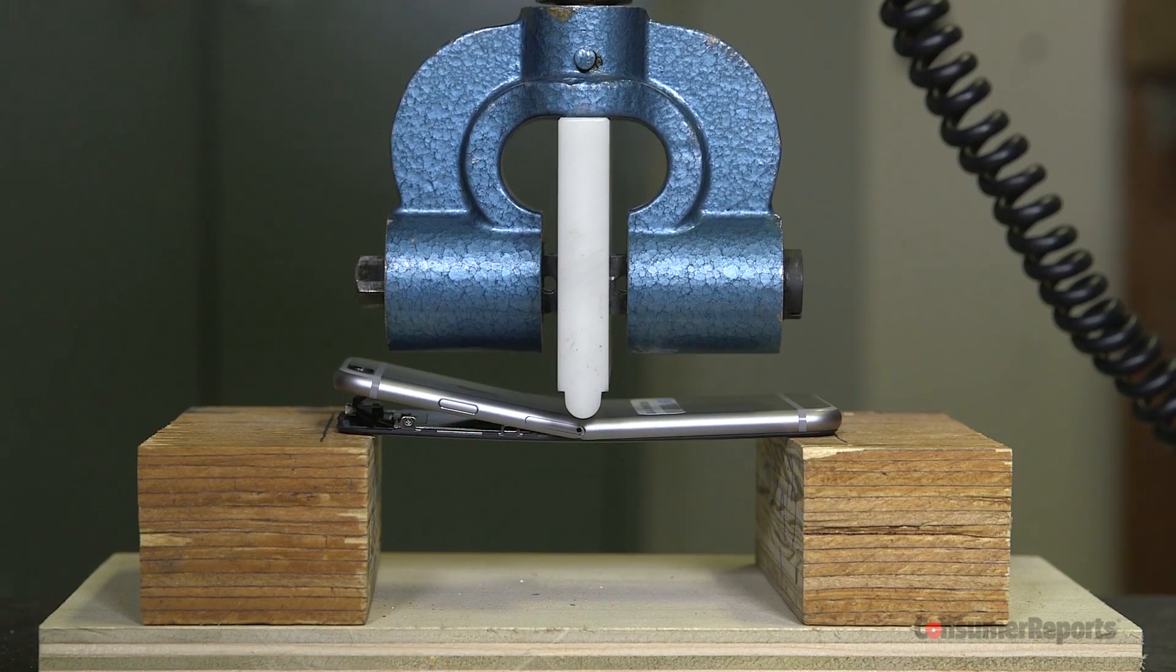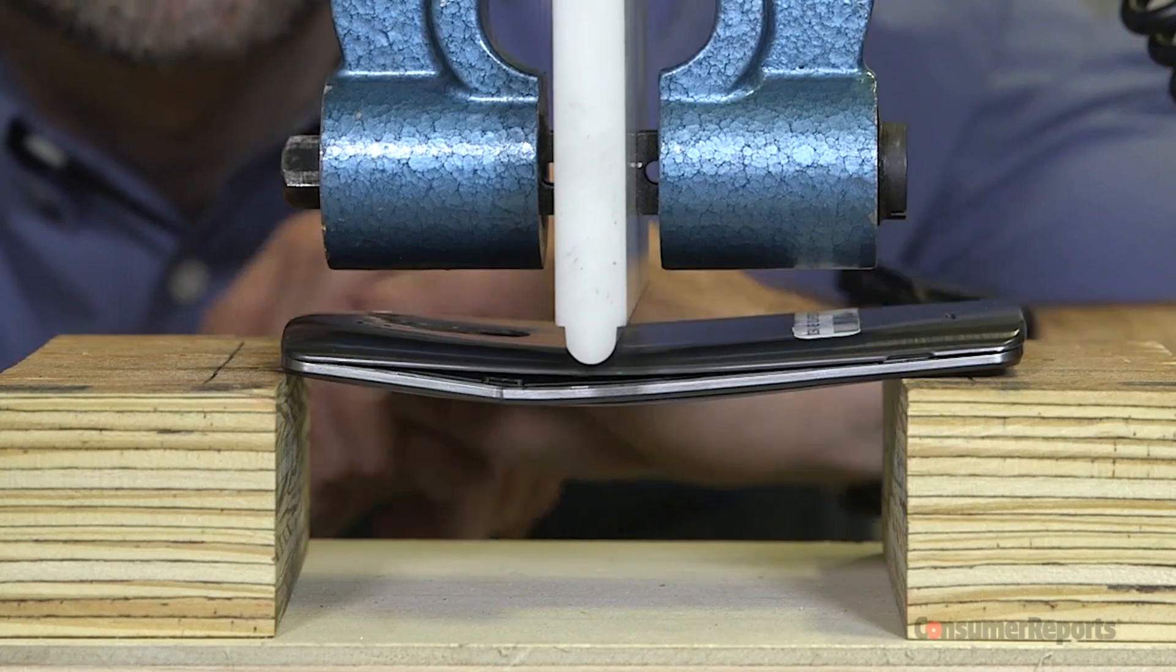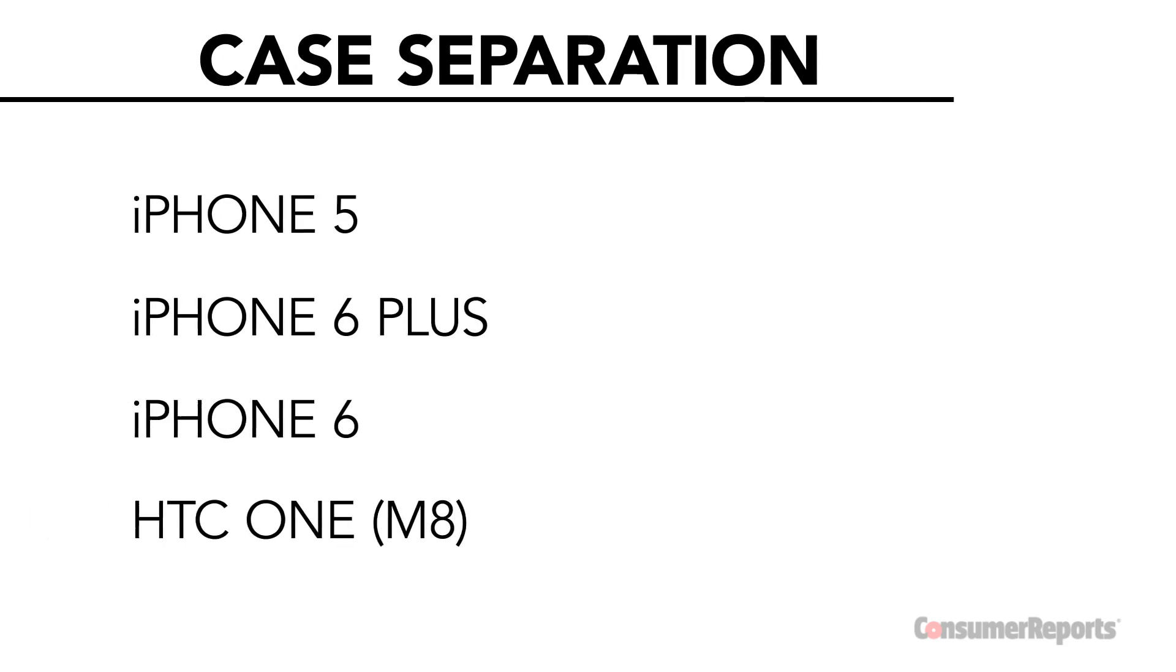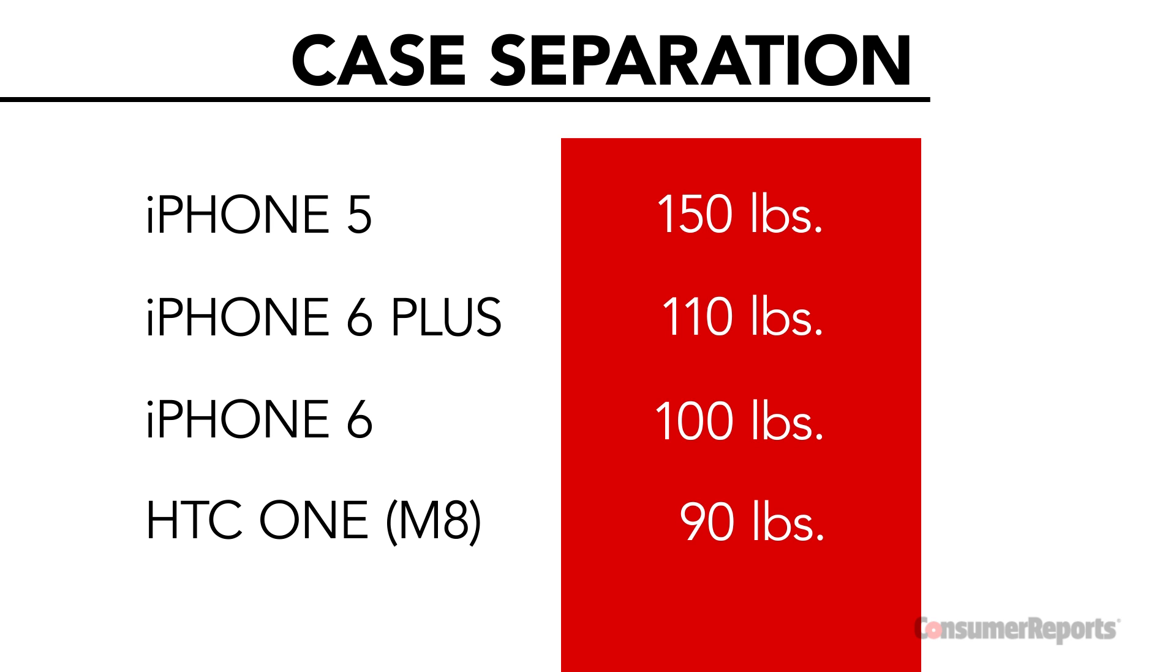As we moved beyond 90 pounds of force, the screens on those phones started separating from their cases. The iPhone 5 held out the longest of these four, maxing out at 150 pounds of force.